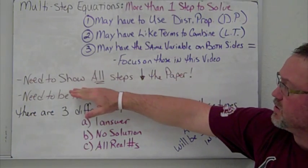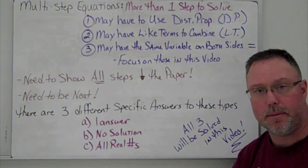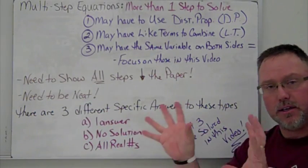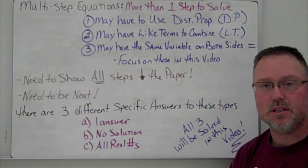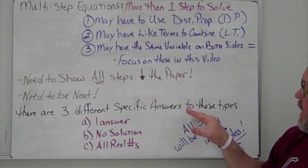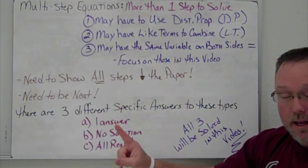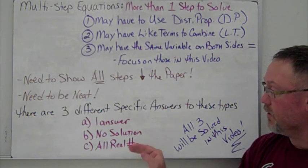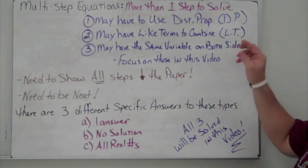The key things are: show all your steps going down the paper, and be neat. The neater you can be, the easier it is to see the process. There are three possible answer types we'll work through today: one answer, no solution, and all real numbers — and all three will appear in this video.